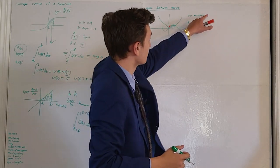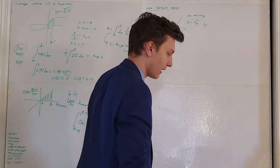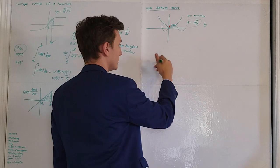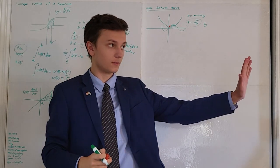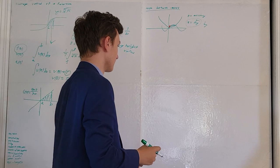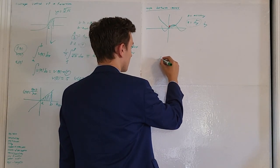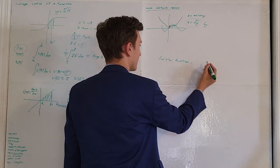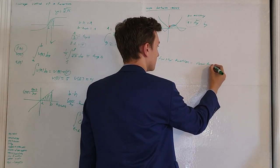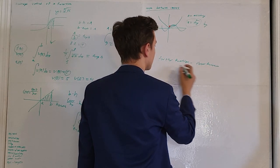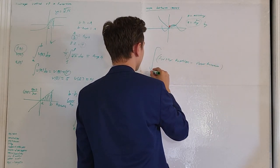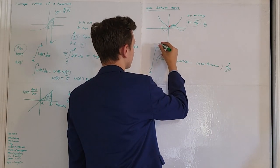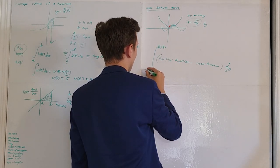Once you identify both functions as functions of y, it follows the same premise. Identify which function is farther from the y-axis than the other — it's your further function minus your closer function — and put that in your integral from a to b dy, where a and b are y-values.